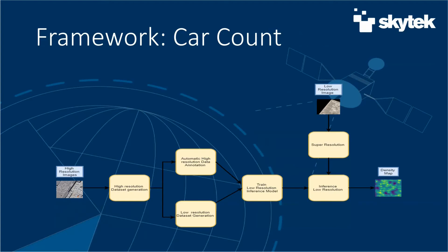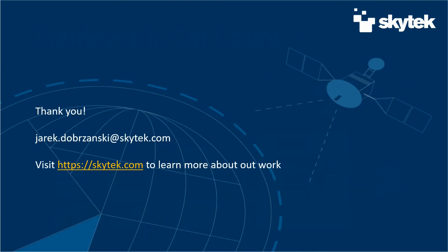To sum up our approach: we started by generating a high-resolution dataset, manually annotated part of it, then automated annotation of the rest. We generated a lower-resolution synthetic dataset and trained a low-resolution inference model that can perform inference on satellite-grade imagery. We also used super resolution to improve the quality of satellite images and to enable manual counts for verification purposes. Thank you very much — I encourage you to visit skytech.com to learn more about our company and our work.